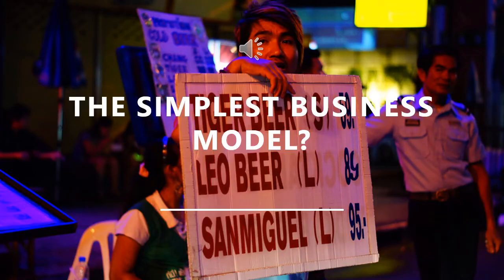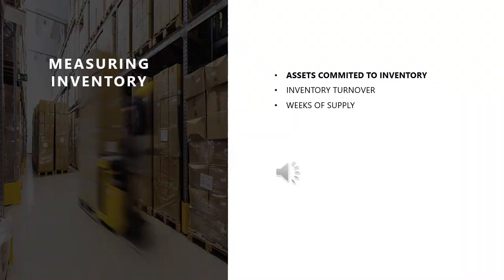We saw the toy example of a beer vendor on Khao San Road, showing that inventory management is a concern for any business of any size. We recalled indicators from the supply chain management chapter: percentage of assets committed to inventory, inventory turnover, and weeks of supply. These capture the paradoxical nature of inventory management — we want both high turnover and a high number of weeks of supply simultaneously.